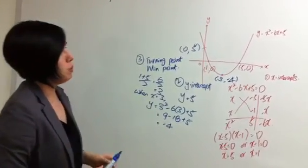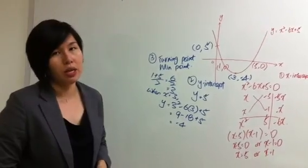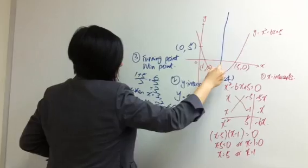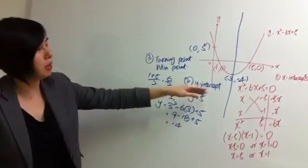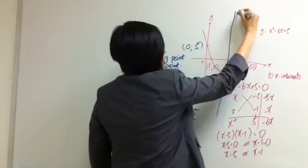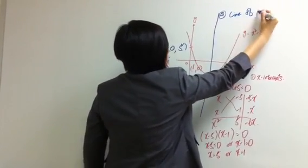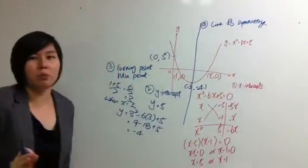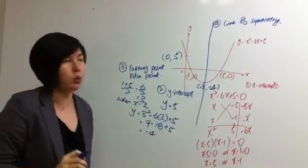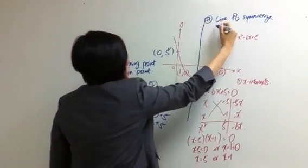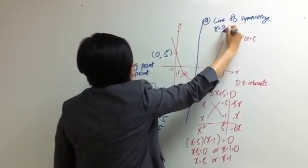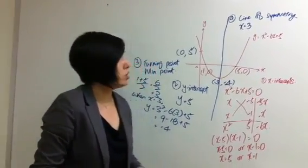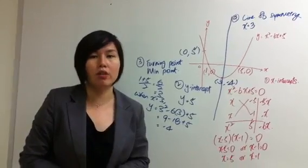The last feature is what I call the line of symmetry. It cuts through your turning point, which is your minimum point. The blue line here is the line of symmetry. You need to be able to state the equation of this line. The equation is simply x equals 3 — this is the standard equation for all vertical lines.